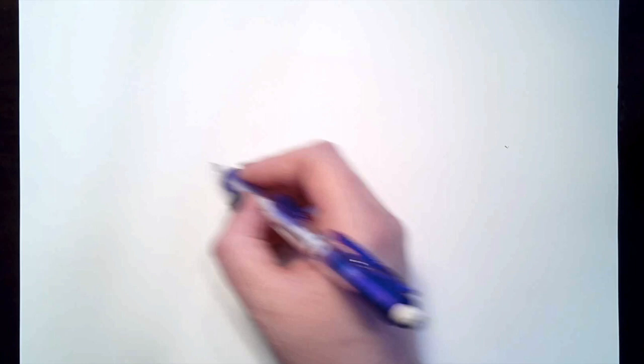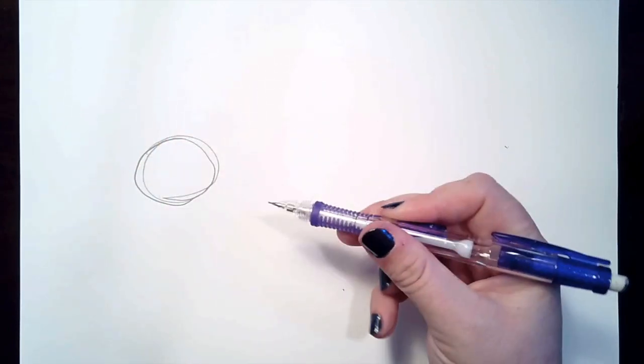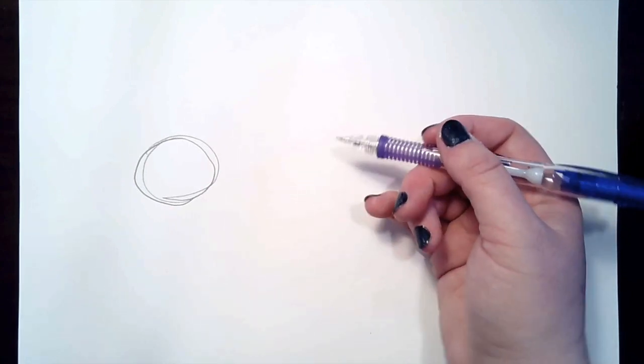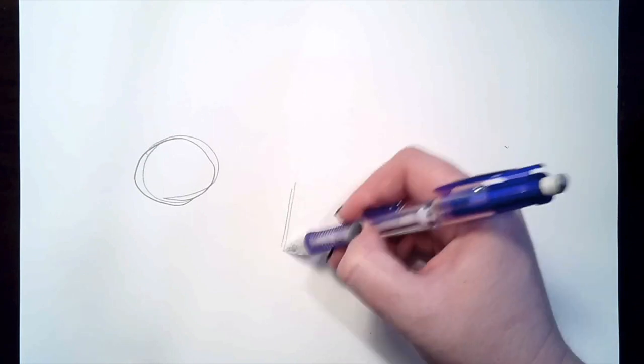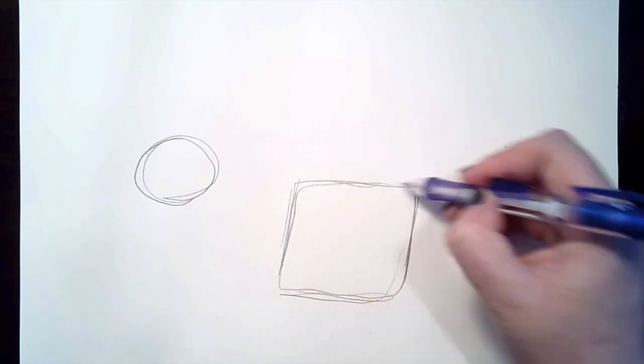For our hyena, we're going to start with a circle for the head. We're going to make a square shape for the body because they have a really compact form. So we're going to add in a square for the body.